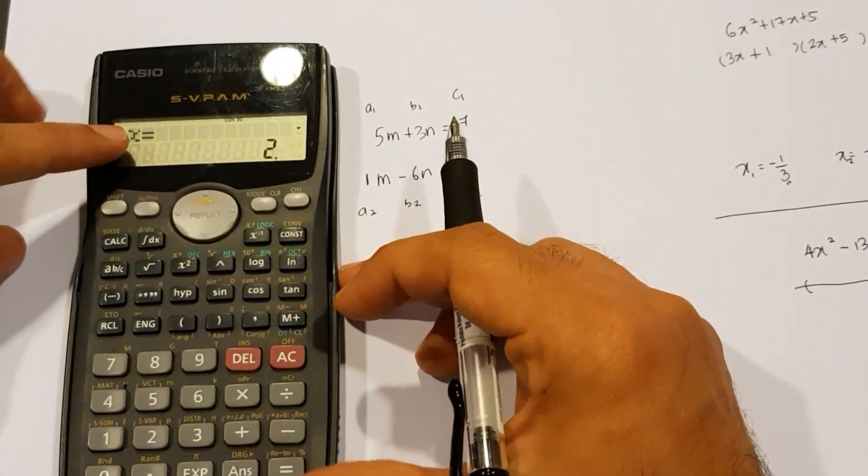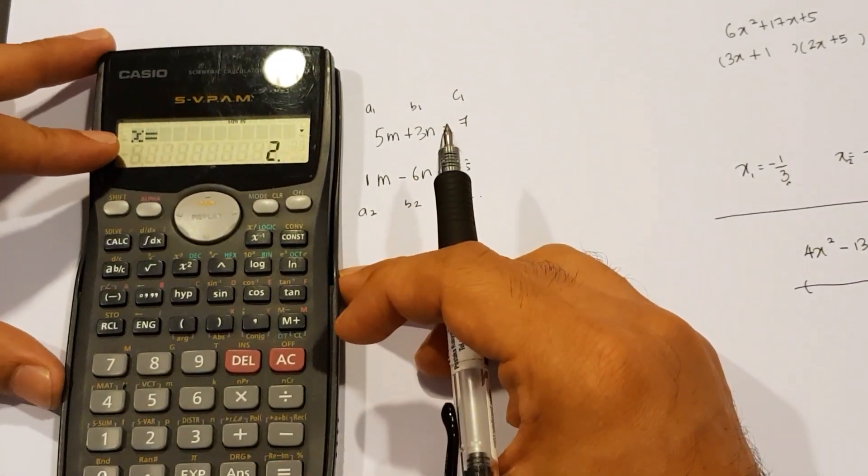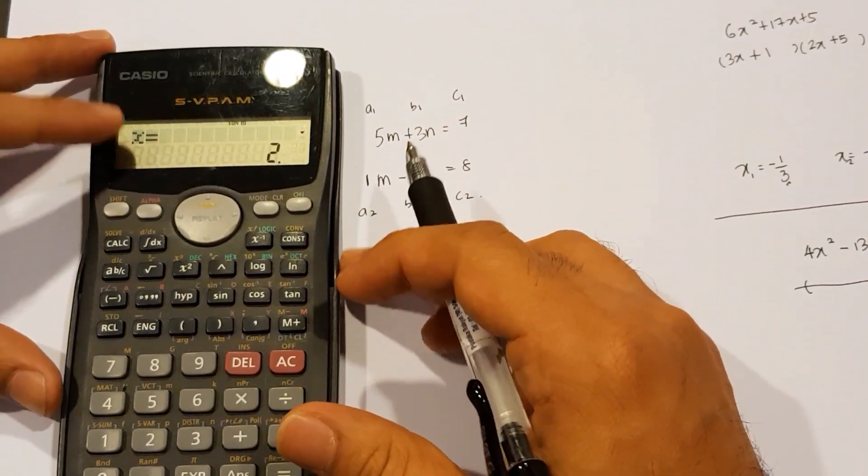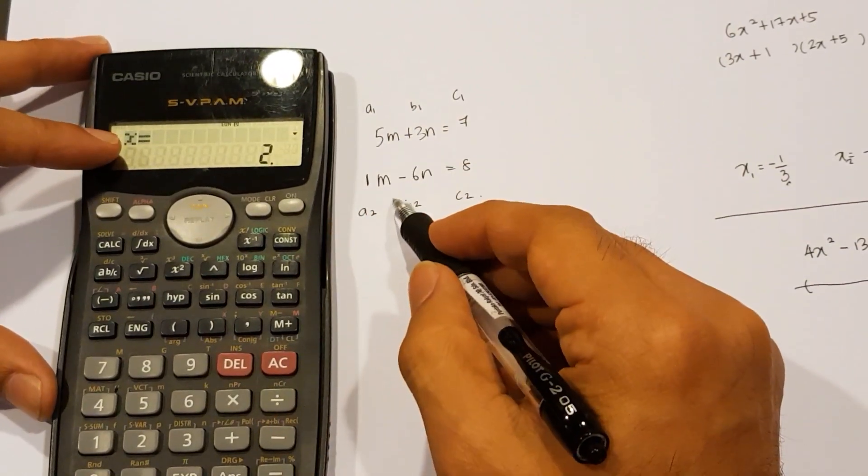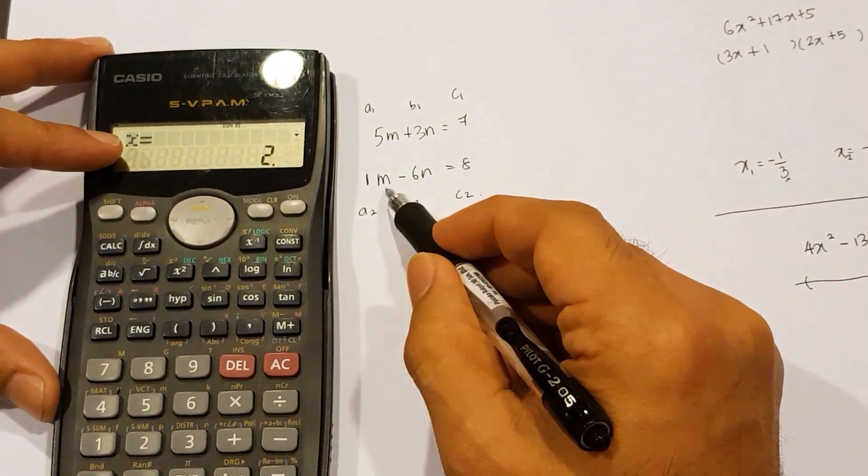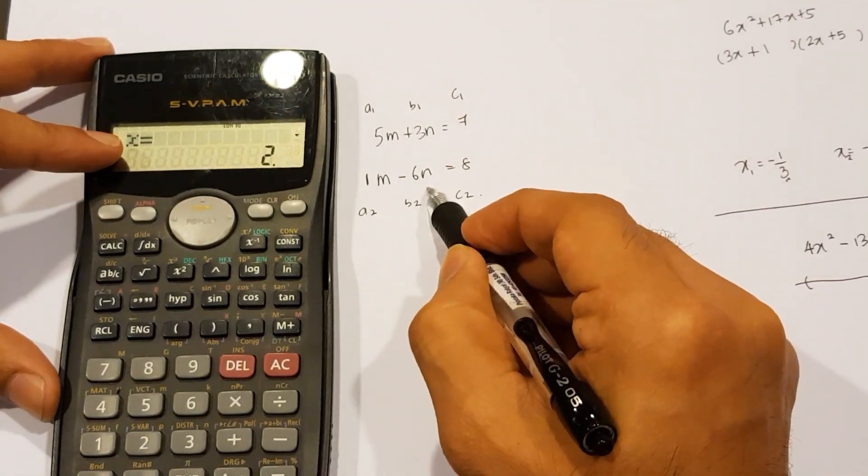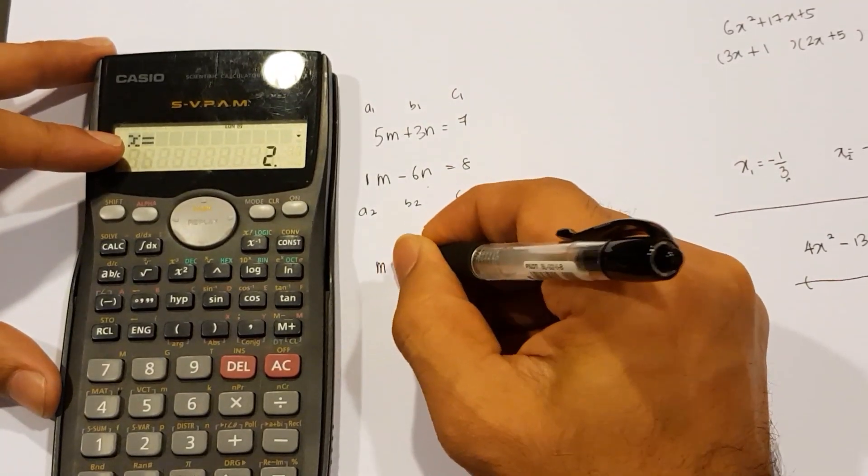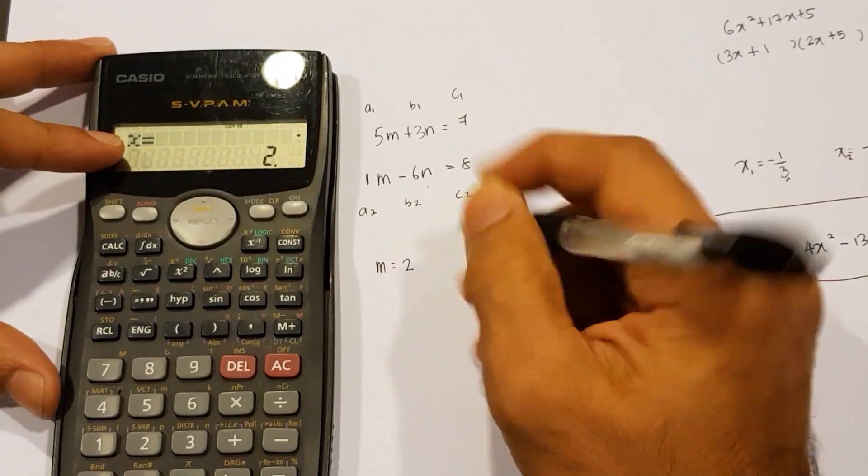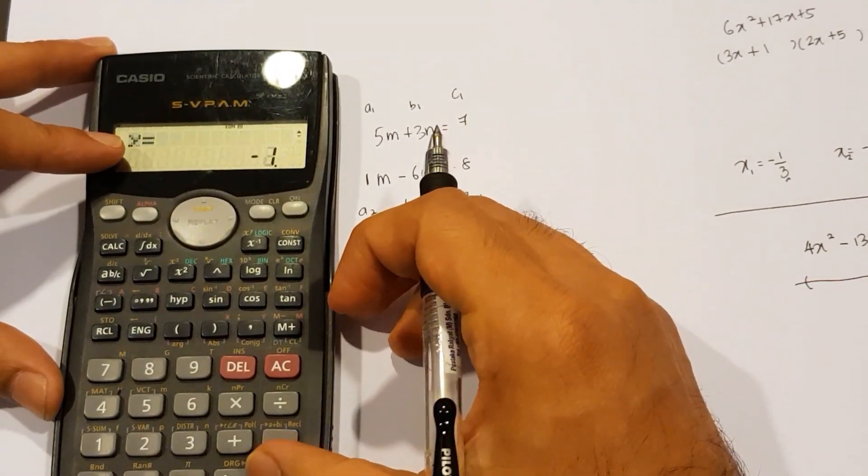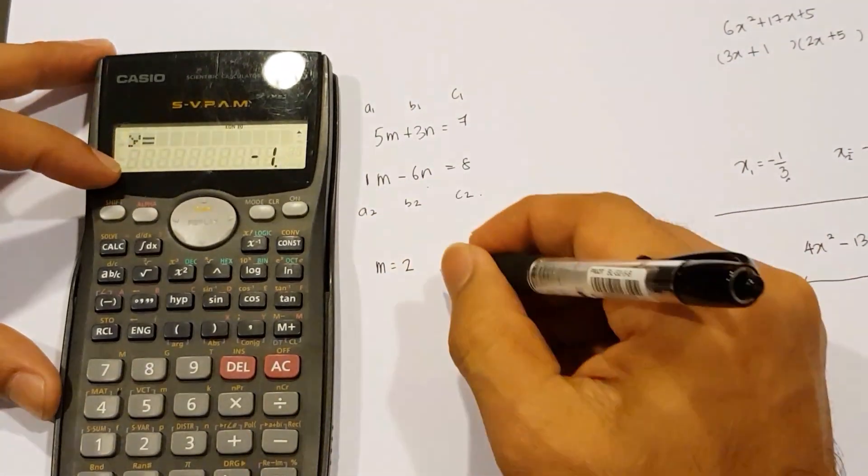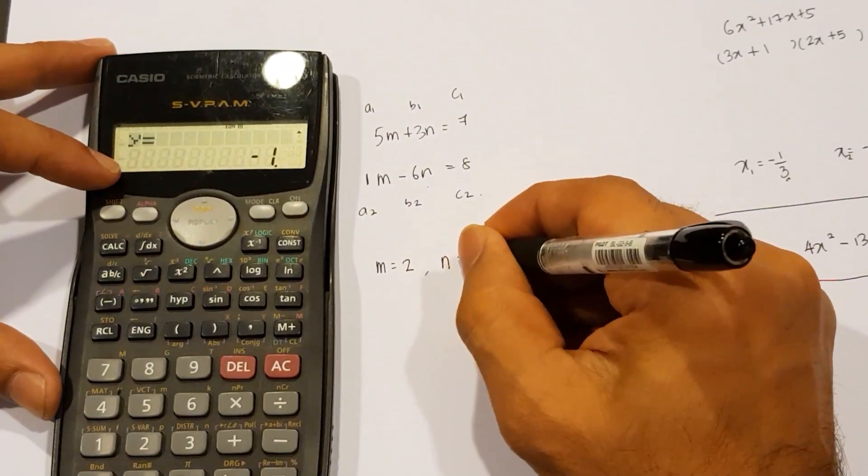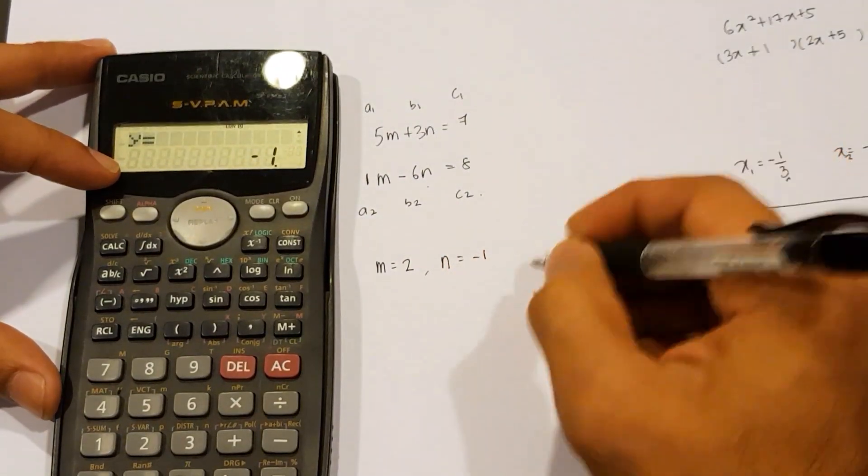Obviously, the calculator is programmed to only give us the answer in terms of X and Y. Here, the X actually tells us that it's M, because our equation begins with M, and then we have N. This means M equals 2. If I go ahead and type equal again, I get negative 1. The second value is for N. N is equal to negative 1.